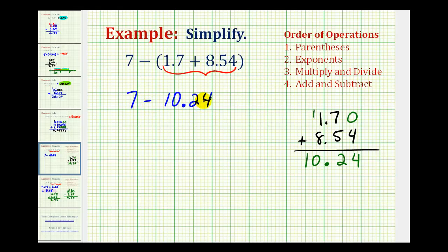And if we want to, we can write this as an addition problem. Subtracting positive 10.24 is the same as adding negative 10.24. So this would be 7 plus negative 10.24.